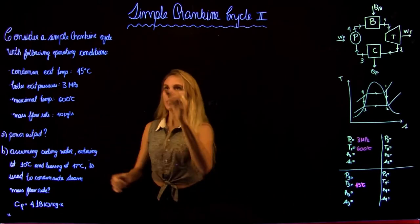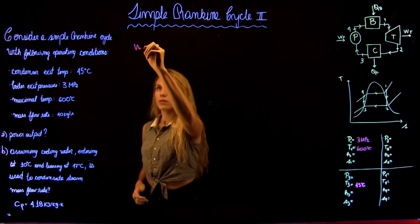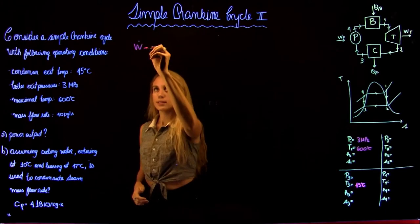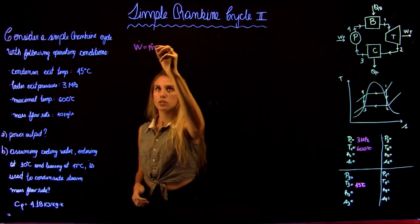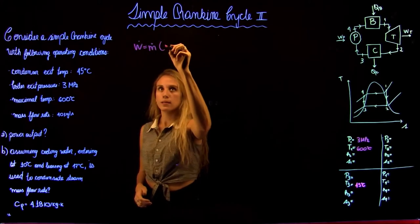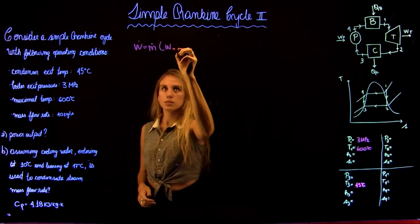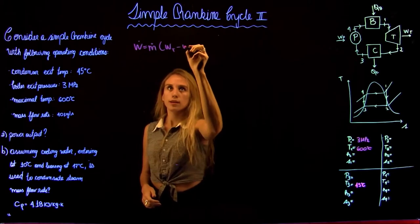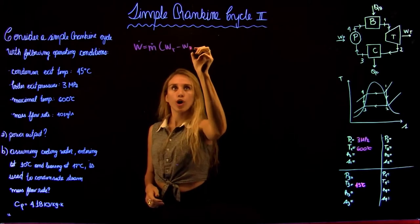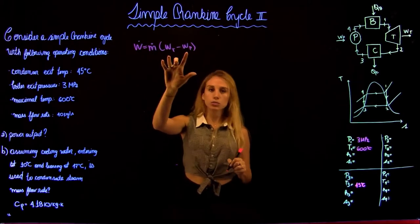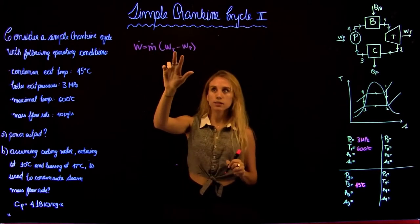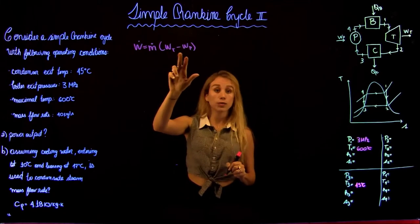The power output is given by the following equation: the mass flow rate times the work of the turbine minus the work of the pump. We have the mass flow rate and we need to get the work of the turbine and the pump.